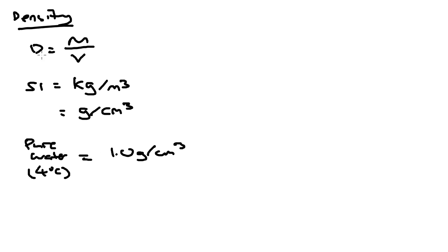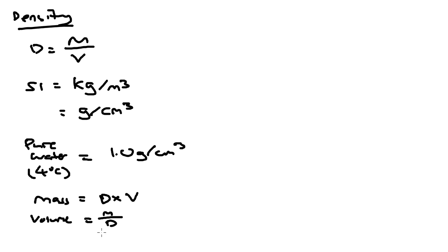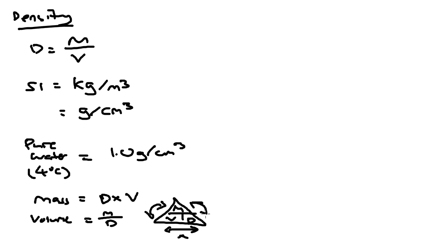Just like speed, if you know the mass and the volume, you can find density. If you know the density and the volume, you can find mass. Mass is density times volume, and volume is mass divided by density. Again, just like speed, you can use a triangle with mass on top and volume and density below. So: mass equals volume times density, density equals mass divided by volume, and volume equals mass divided by density.